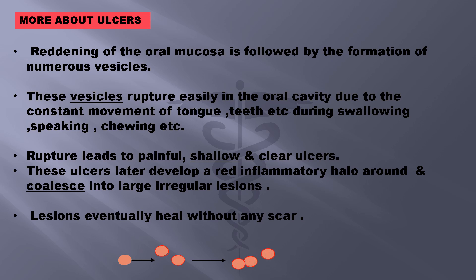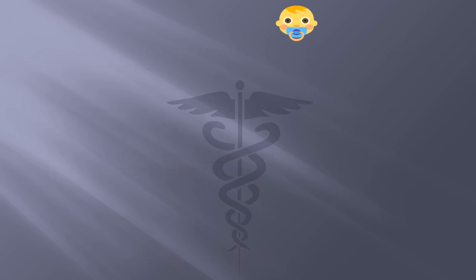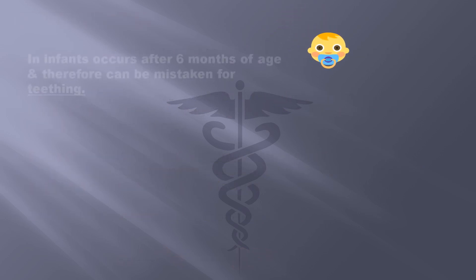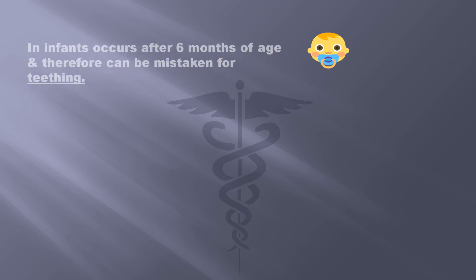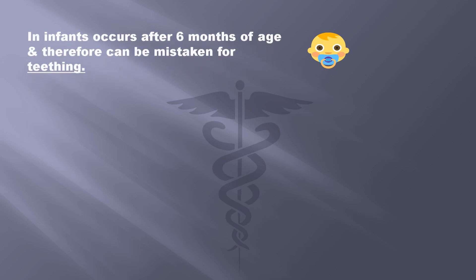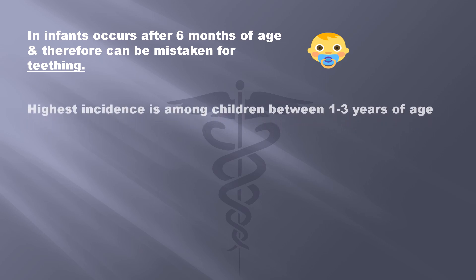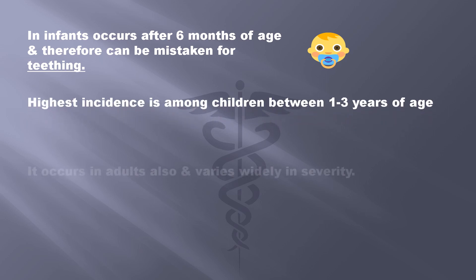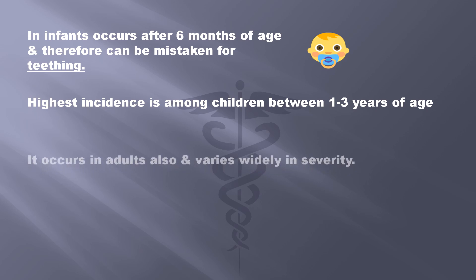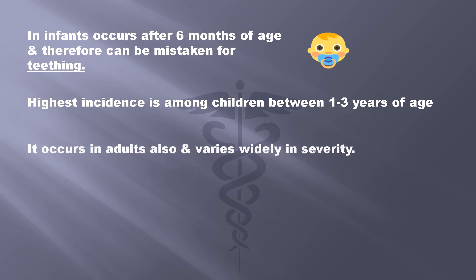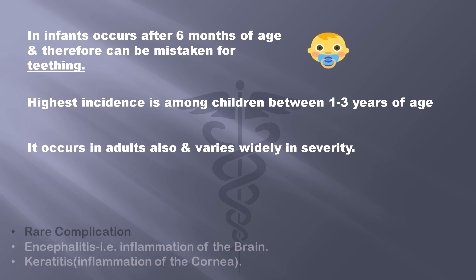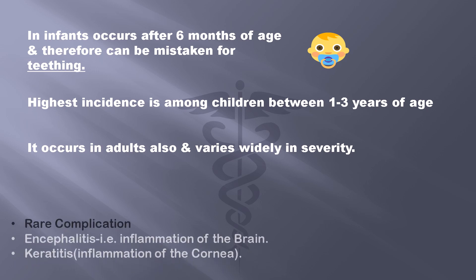Is there any specific age group more susceptible to the primary infection? In infants, it occurs after six months of age and can therefore be mistaken for teething. The highest incidence is among children between one to three years of age. It also occurs in adults and varies in severity. Rare complications are encephalitis, that is inflammation of the brain, and keratitis, that is inflammation of the cornea.